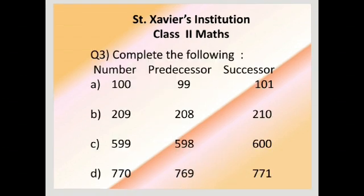Our question number 3: complete the following. You have to write predecessor and successor of the given number. First sum: 100. So predecessor is minus 1, so you will write 99. Successor is plus 1, you will write 101.